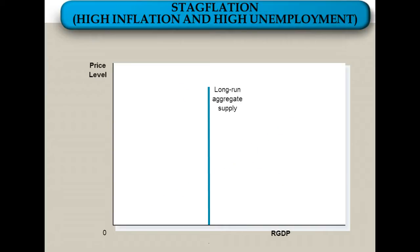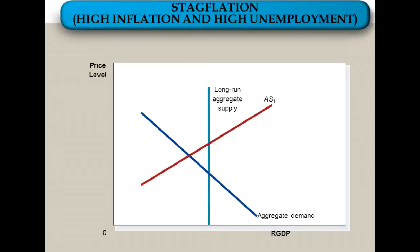And of course the thing that economists lose sleep over — stagflation — is when you have high inflation and high unemployment. As we learned in our last lesson, that is when aggregate supply shifts to the left. In this case, we have prices that are too high and our GDP that is too low, and therefore we have high levels of inflation and high levels of unemployment. That's caused by aggregate supply shifting to the left.